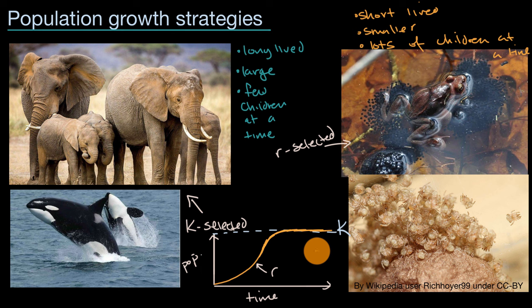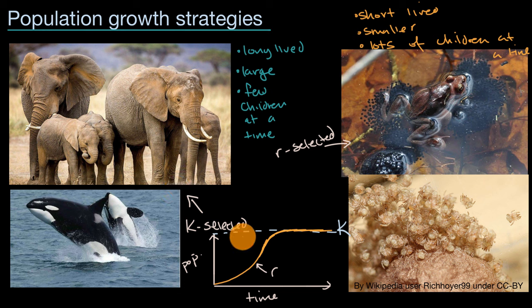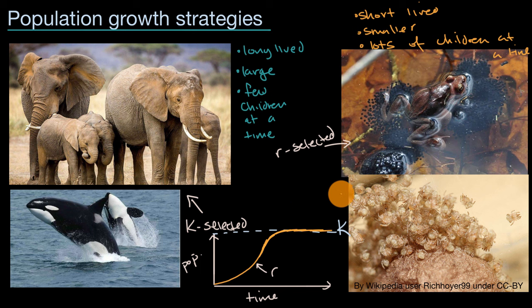As you can imagine, with most categorizations, nature is not that clean — things are not always going to be strictly on one side or the other. For example, turtles lay a lot of eggs but they live a very long time. It's also worth noting that there's no value judgment that one strategy is better than the other; both have been successful, and the fact that these species exist today shows that they have worked well. It is worth noting that invasive species tend to be more R-selected — they will just grow, limited more by the environment than by each other — while K-selected species are often the ones most affected by invasive species.